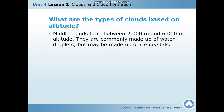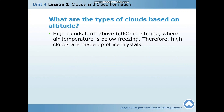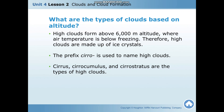Middle clouds form between 2000 meters and 6000 meters altitude. They are commonly made up of water droplets but may also be made up of ice crystals. The prefix 'alto' is used to name middle clouds. The two types of middle clouds are altocumulus and altostratus. High clouds form above 6000 meters altitude where air temperature is below freezing, so high clouds are made up of ice crystals. The prefix 'cirro' is used to name high clouds, and the types are cirrus, cirrocumulus, and cirrostratus.